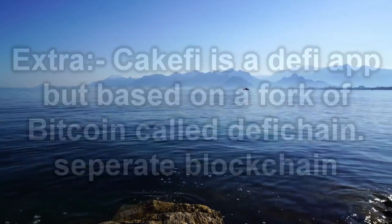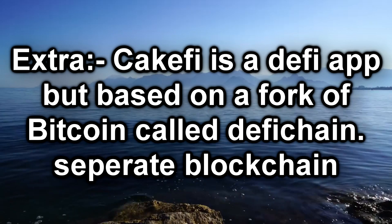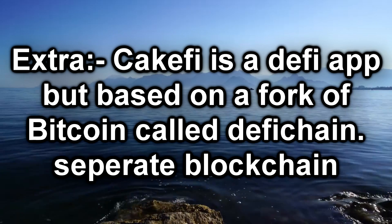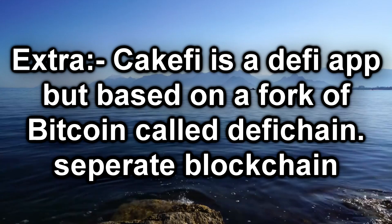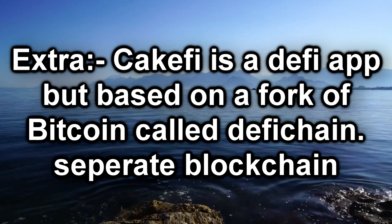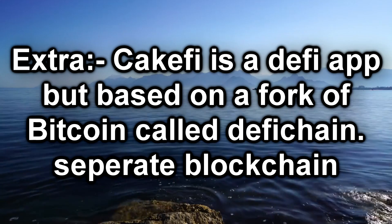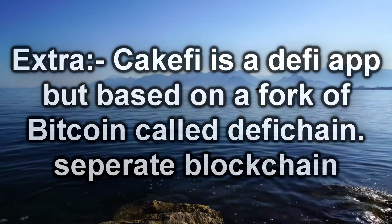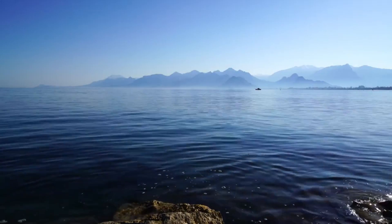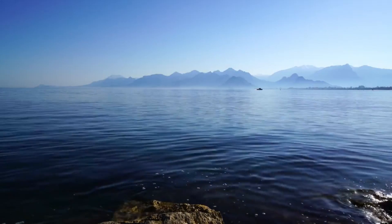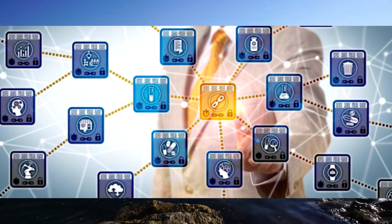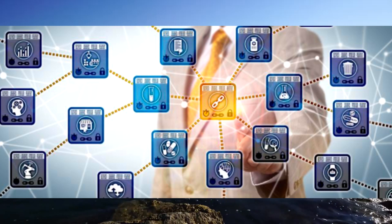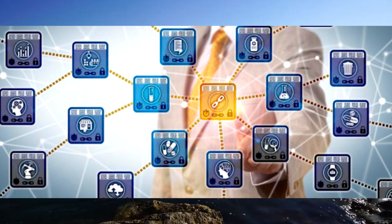Some projects attempt to bring Layer 3 functionality to the Bitcoin ecosystem by using apps designed on forks of Bitcoin. However, these apps are still based on their own blockchains, not on the core Bitcoin blockchain, so keep that in mind. The long goal of Layer 3 is to try to accomplish the idea of interoperability of blockchains where blockchains can interact with each other and achieve IoT, or the Internet of Things.